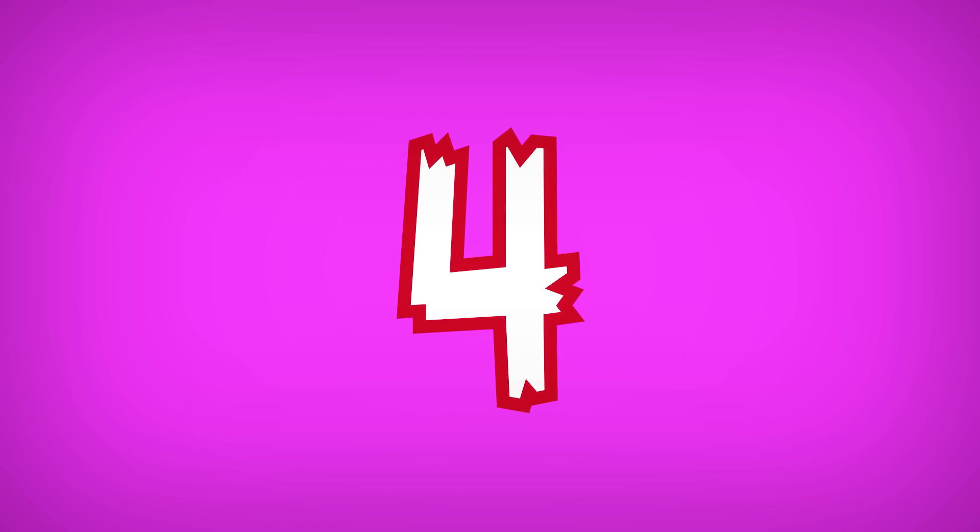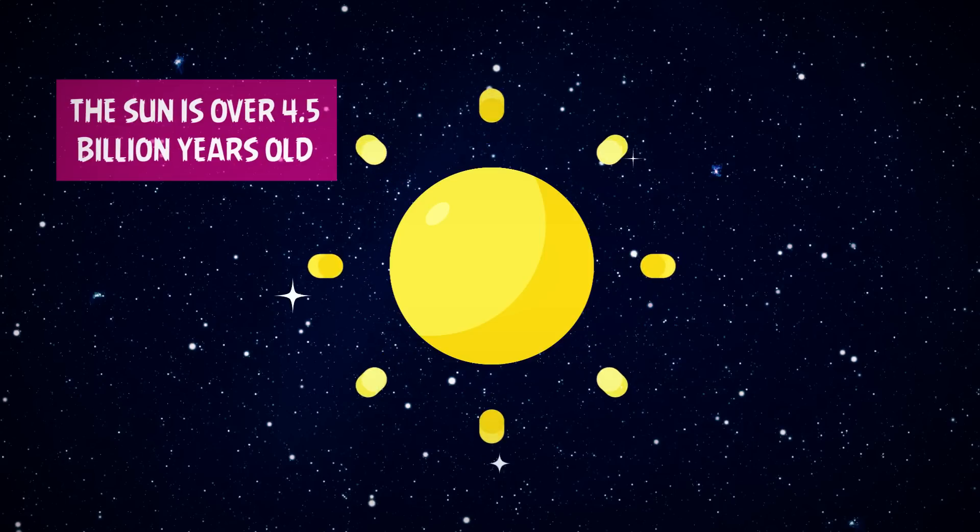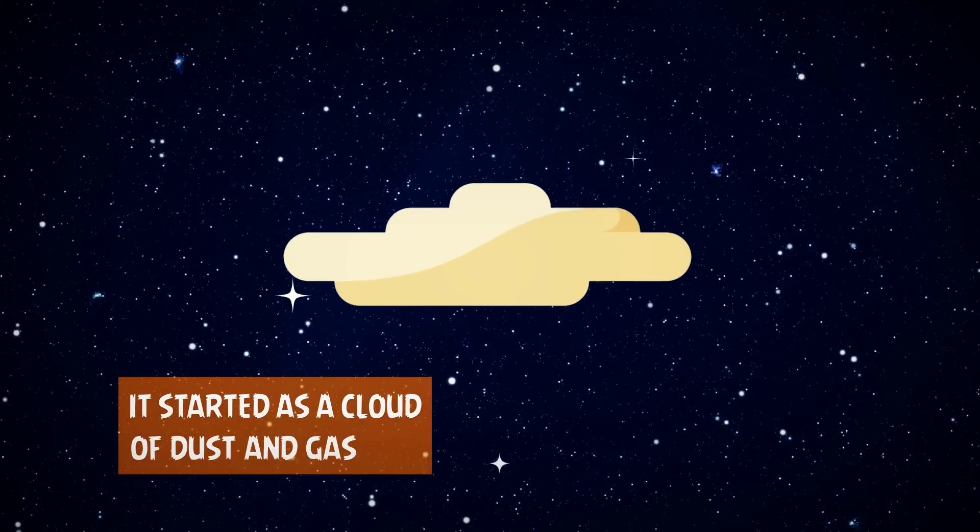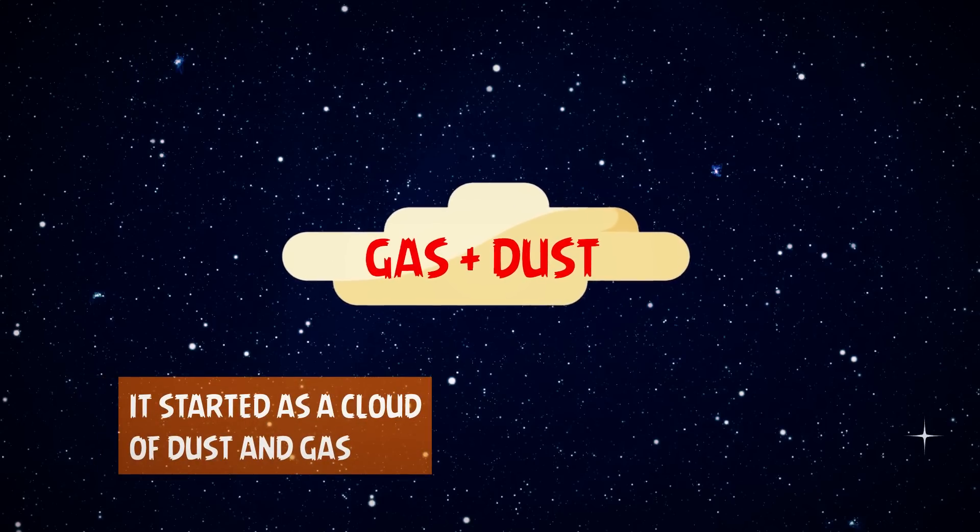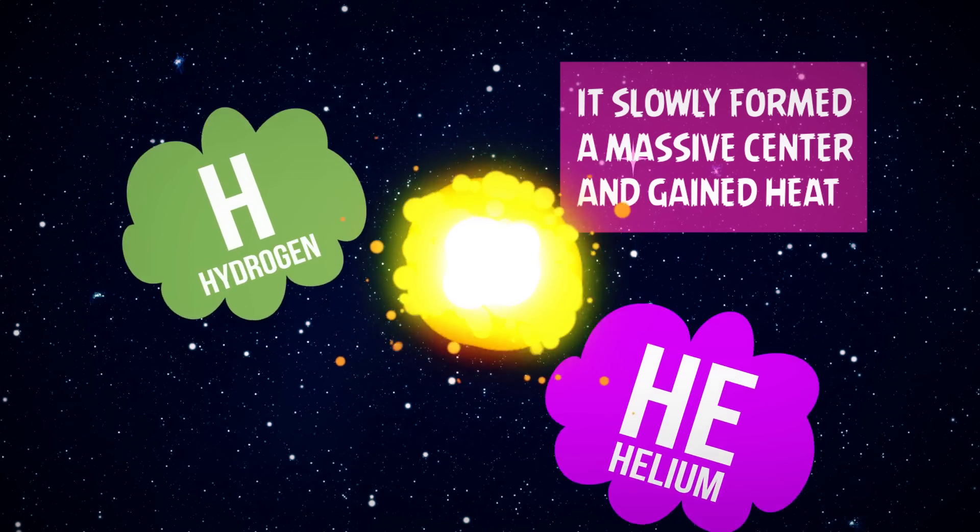Number 4. The sun is over 4.5 billion years old. It started as a cloud of dust and gas. It slowly formed a massive centre and gained heat. It is made of hydrogen and helium gases.